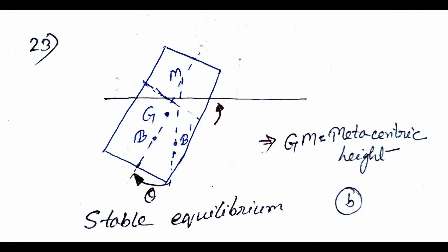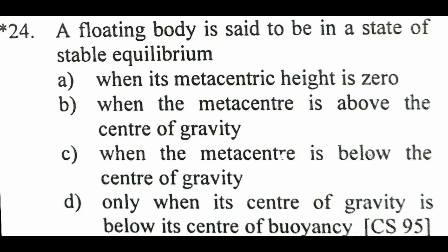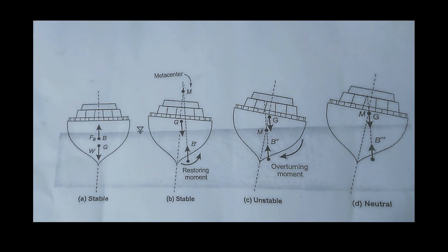A floating body is said to be in a state of stable equilibrium when: A — metacentric height is zero, B — metacenter is above the center of gravity, C — metacenter is below the center of gravity, D — center of gravity is below the center of buoyancy. When the metacenter and center of gravity coincide, it is stable equilibrium.